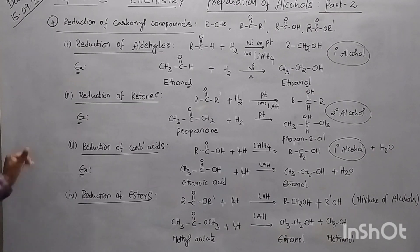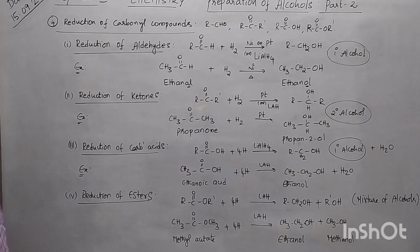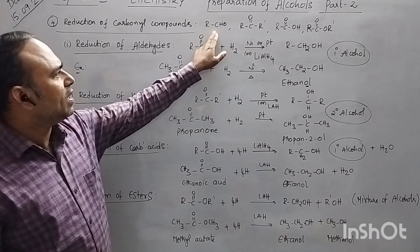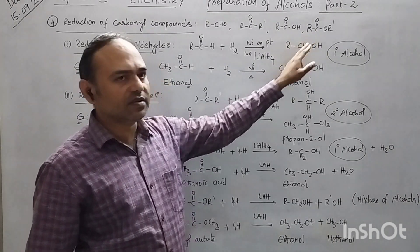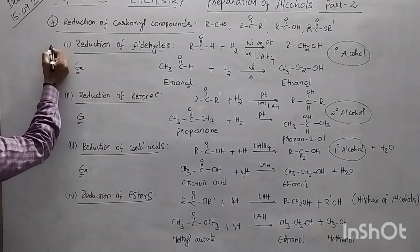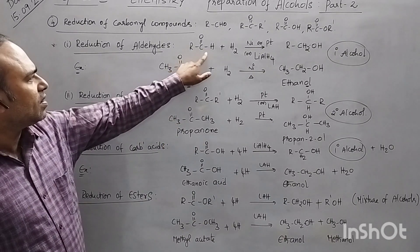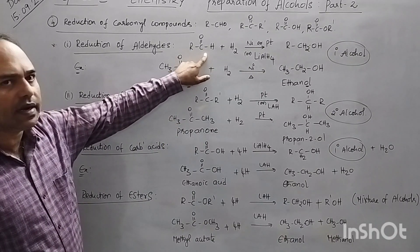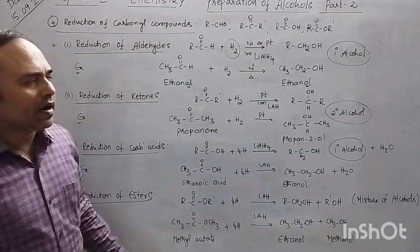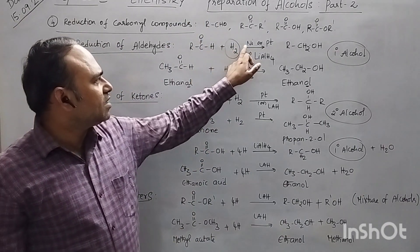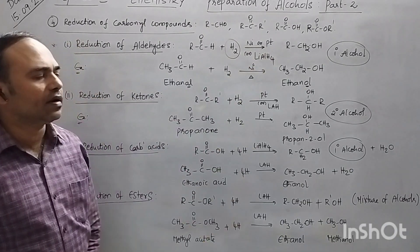The fourth method of preparation is reduction of carbonyl compounds. Carbonyl compounds are of four types: aldehydes, ketones, carboxylic acids, and esters. For reduction of aldehydes, RCHO is the aldehyde, and reduction is carried out in the presence of hydrogen. The catalyst used is either nickel, platinum, or lithium aluminium hydride.